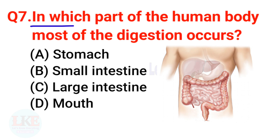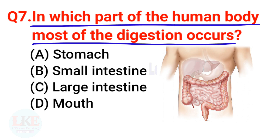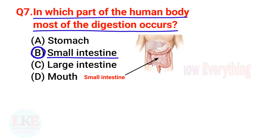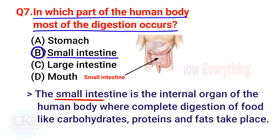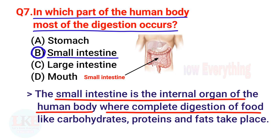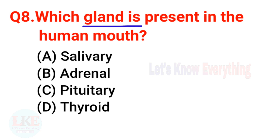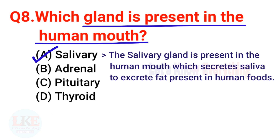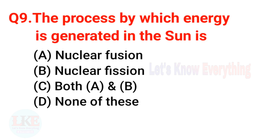Question 7: In which part of the human body does most digestion occur? Options: A) Stomach, B) Small intestine, C) Large intestine, D) Mouth. The right answer is option B — small intestine, where complete digestion of carbohydrates, proteins, and fats takes place. Question 8: Which gland is present in the human mouth? The right answer is option A — the salivary gland, which secretes saliva.